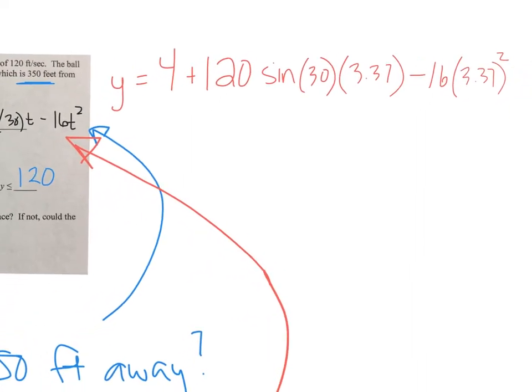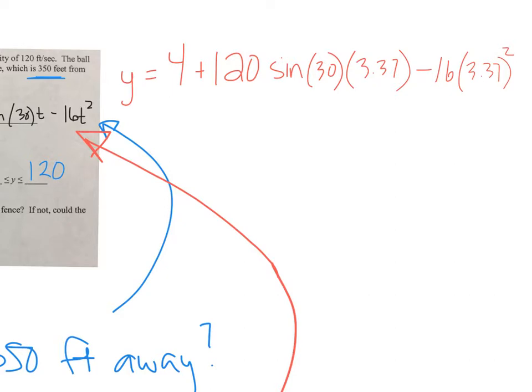So 120 times the sine of 30 times 3.37 minus 16 times 3.37 squared gives me a height of 24.49, or basically 25 feet.